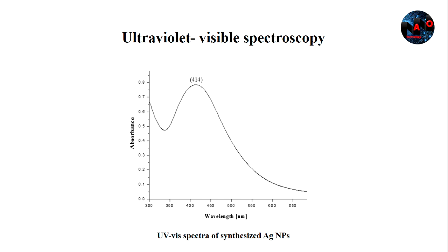Past studies suggested that an SPR peak located between 410 and 450 nanometers has been observed for silver nanoparticles and might be attributed to spherical nanoparticles.